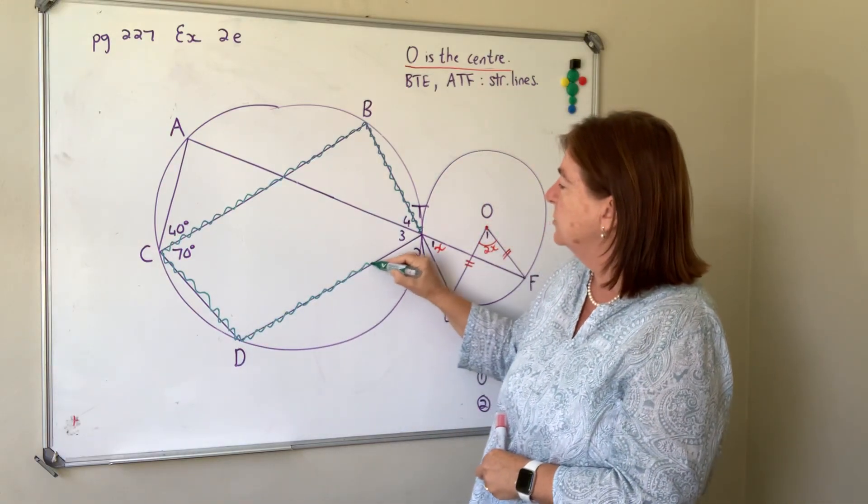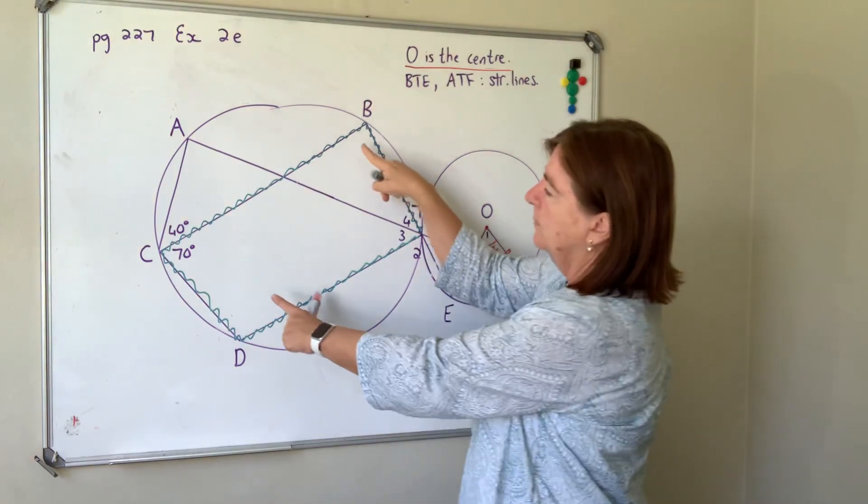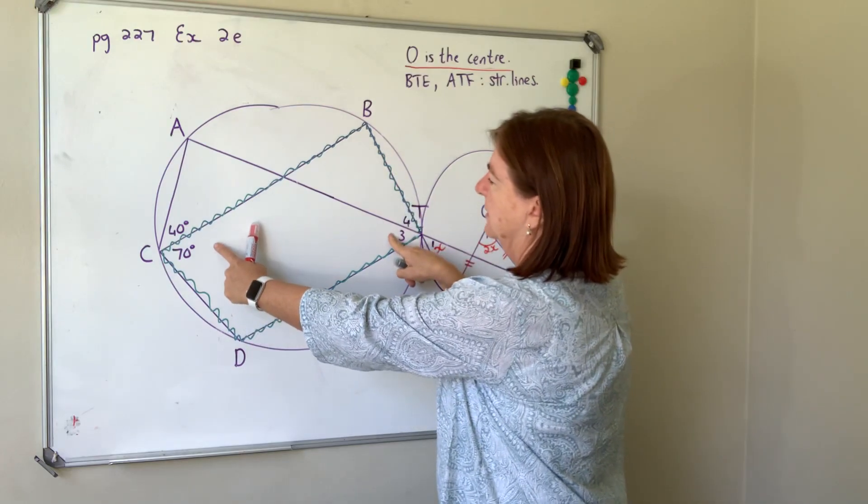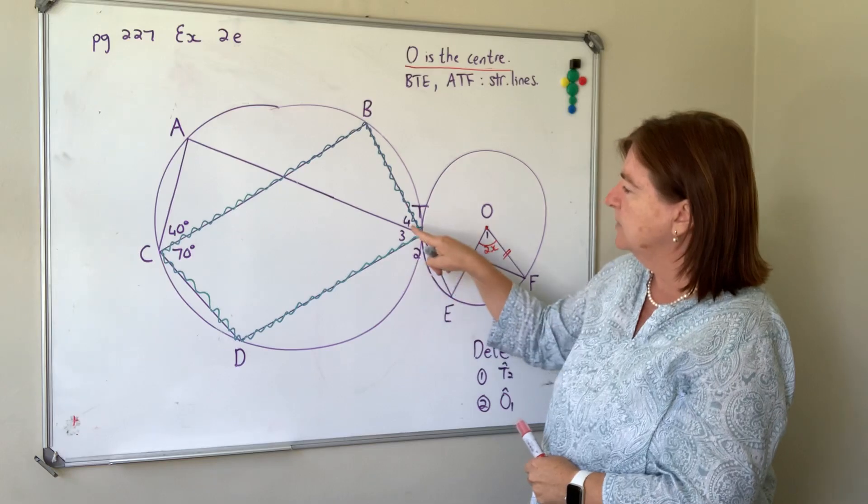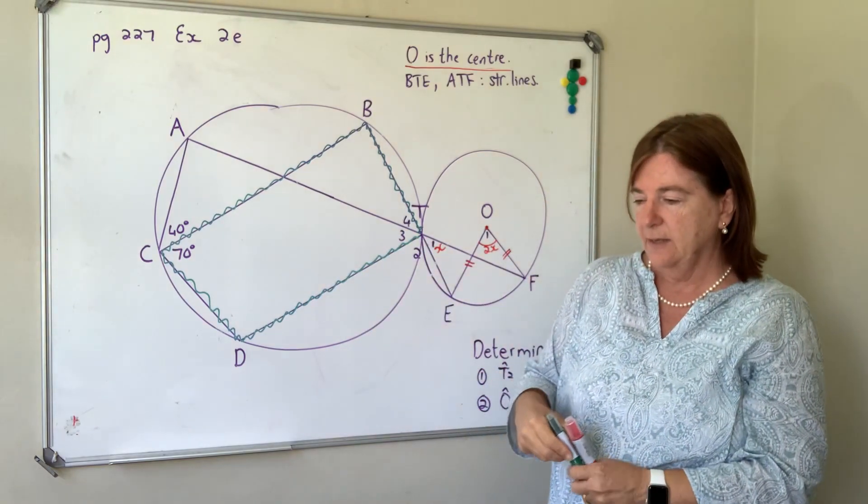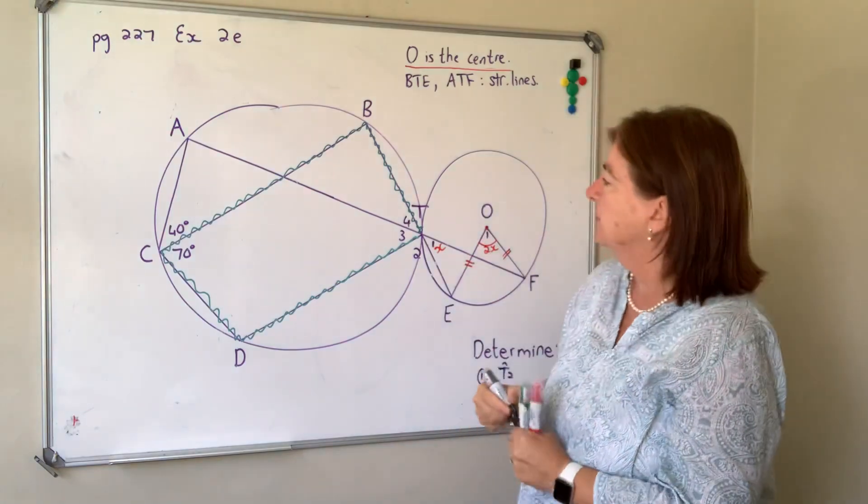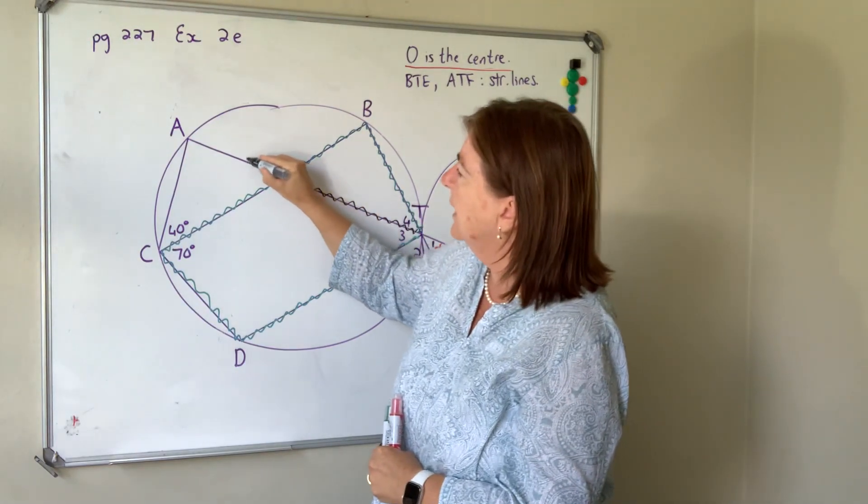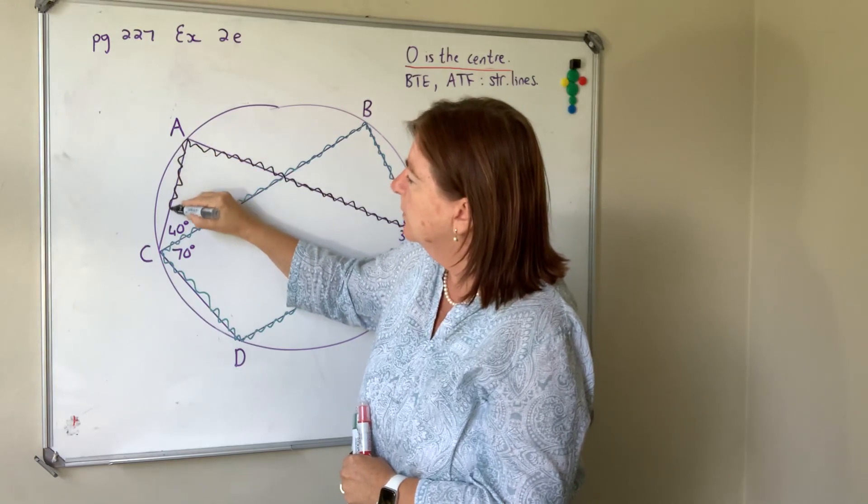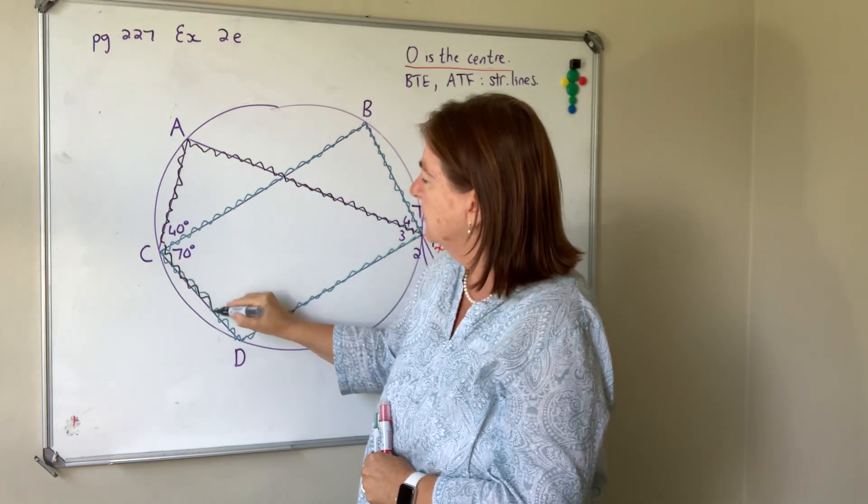Remember cyclic quad is where you have four points on the circumference of the circle, so there's our cyclic quad. And then immediately there's two theorems, so we know that the opposite angles would be supplementary. We also know that the exterior angle is equal to the interior opposite.